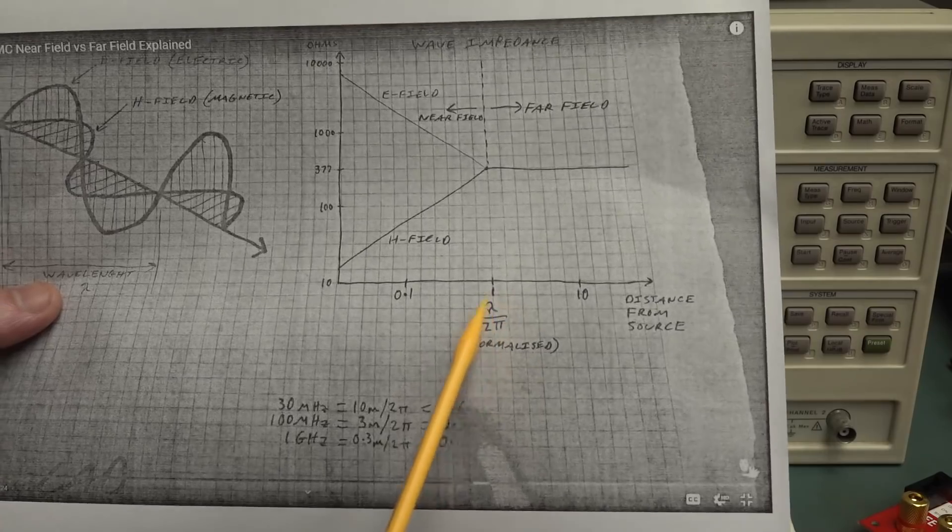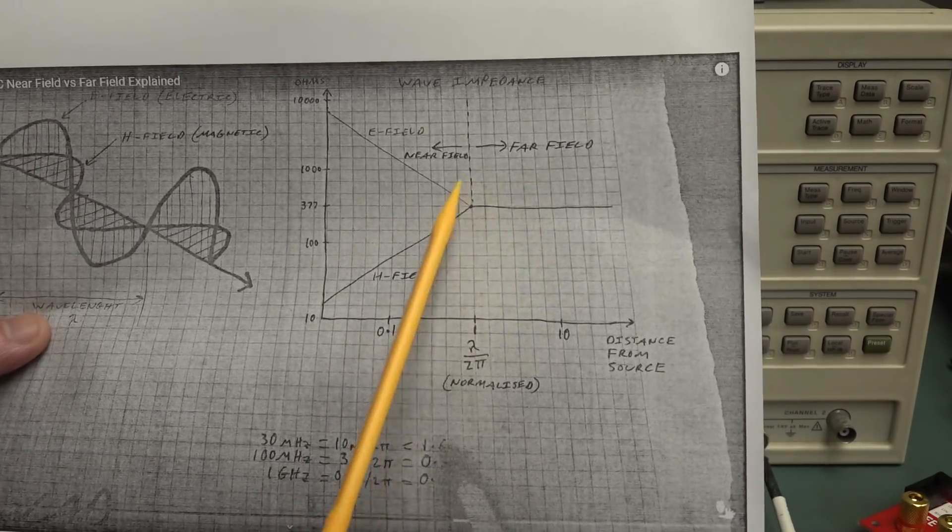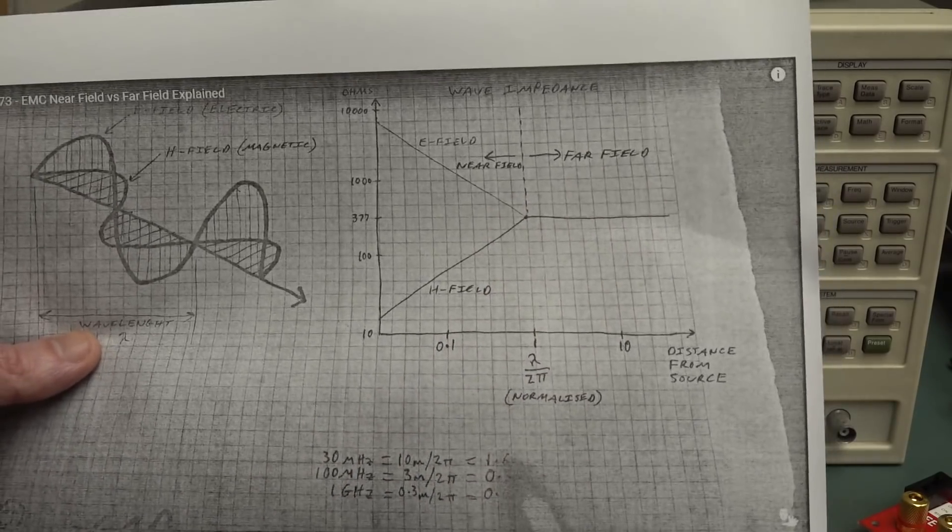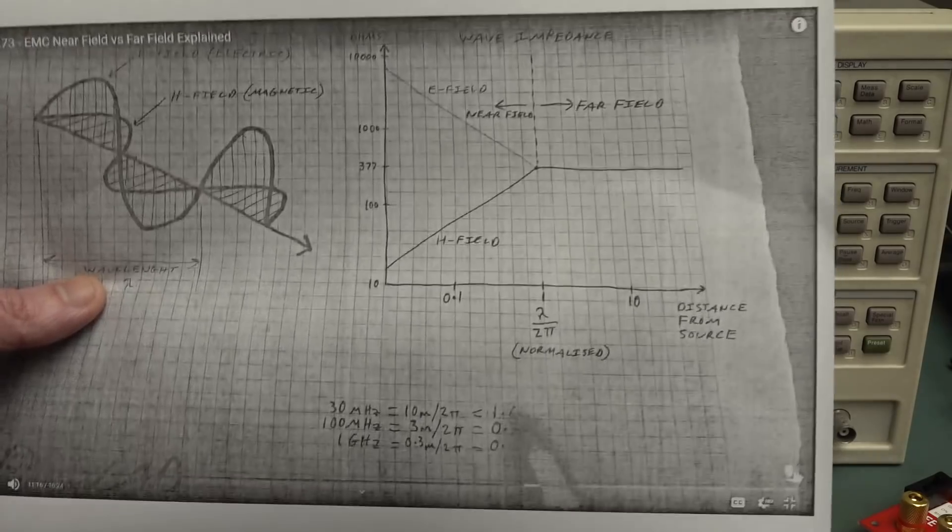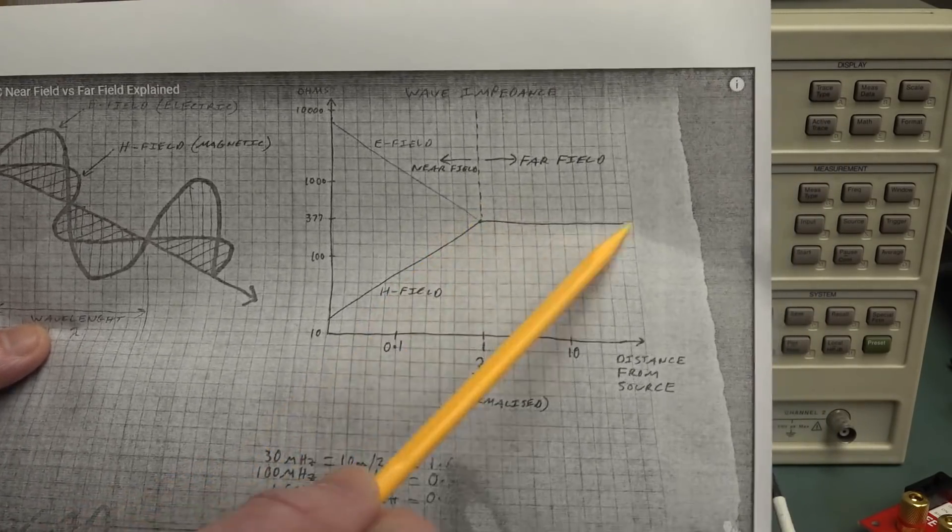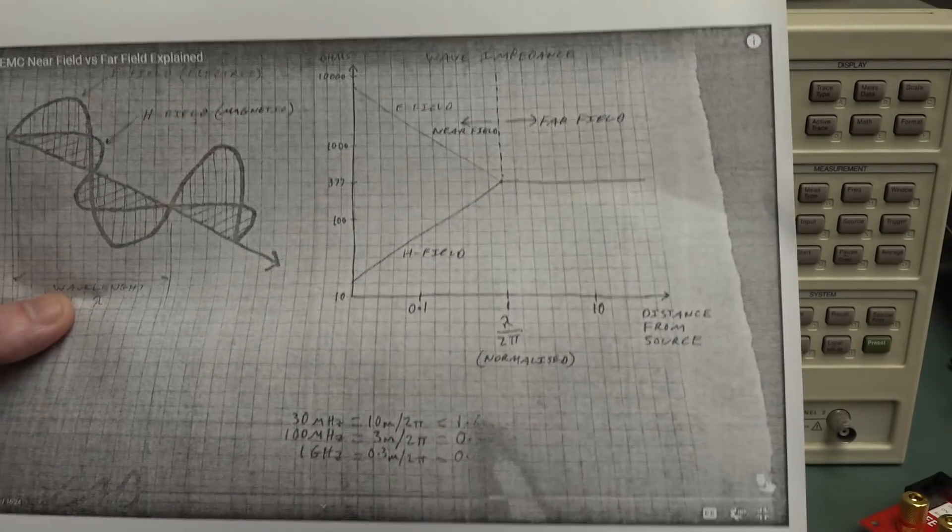It's only when you get basically a wavelength pi on two distance away do they start to combine to form the EM field, or the electromagnetic radiation that you're more familiar with. The electric and magnetic fields combine in the far field, i.e. further away you go, to give you an electromagnetic field.